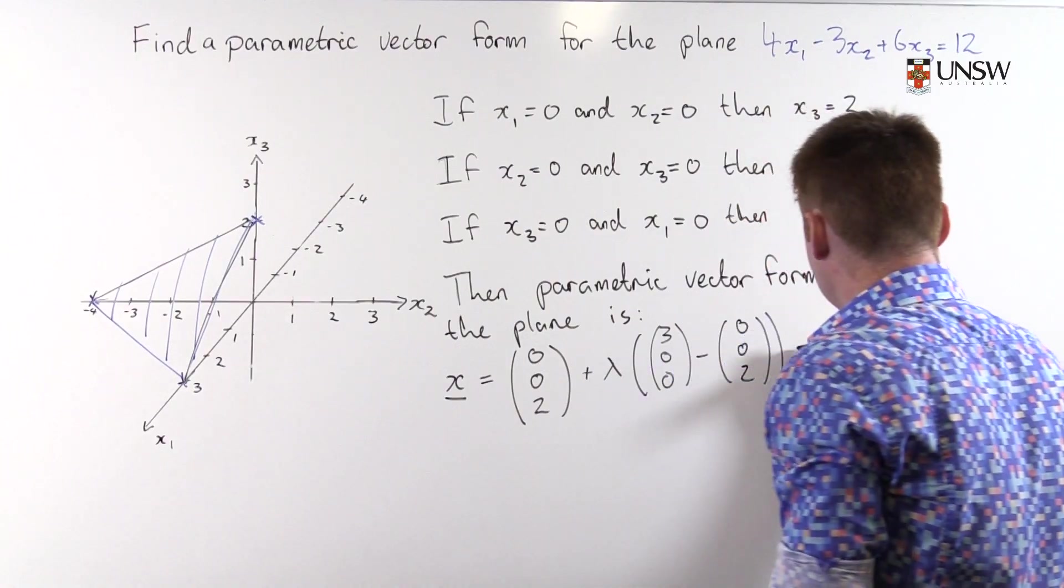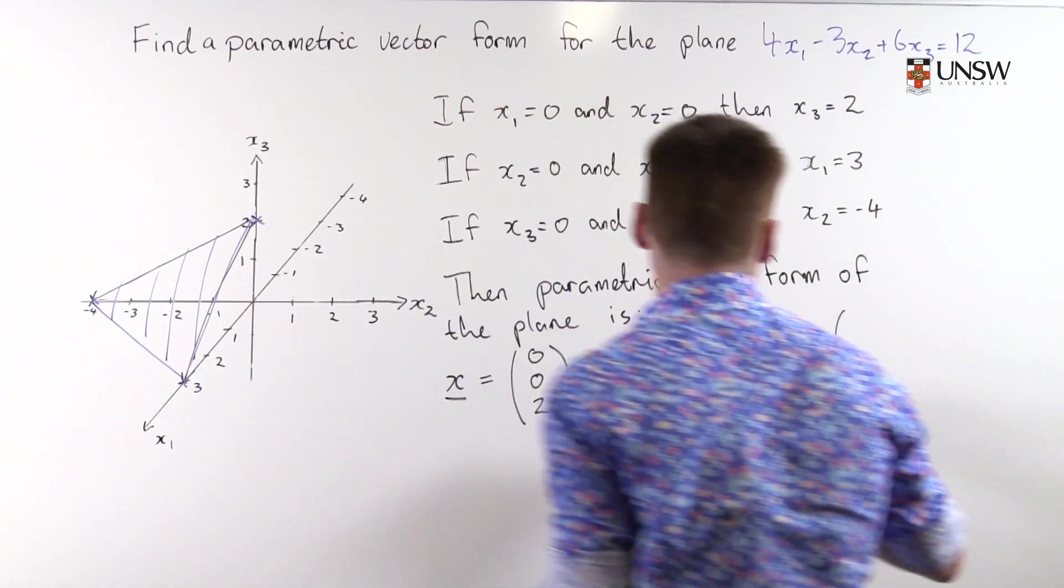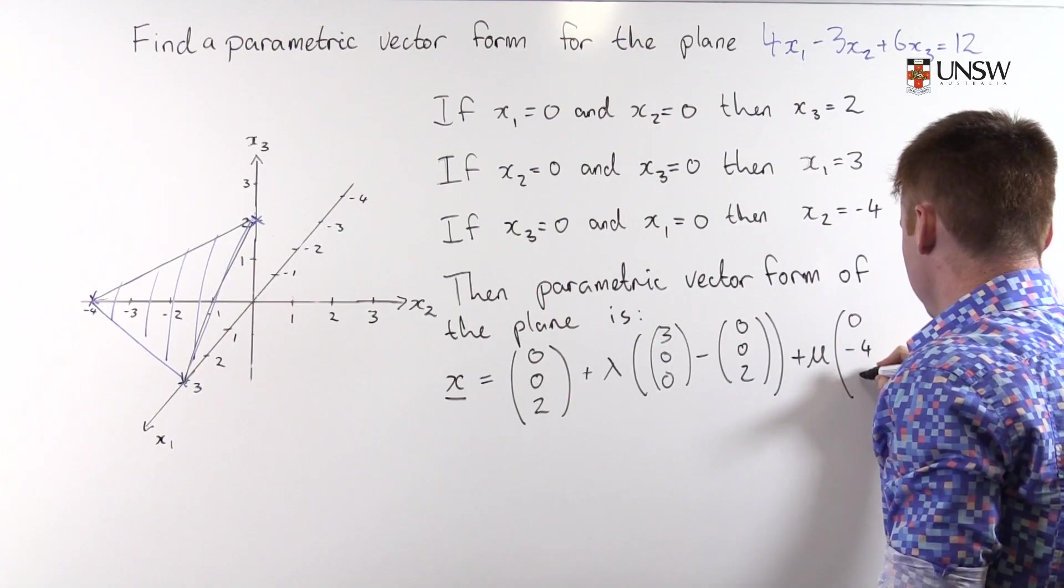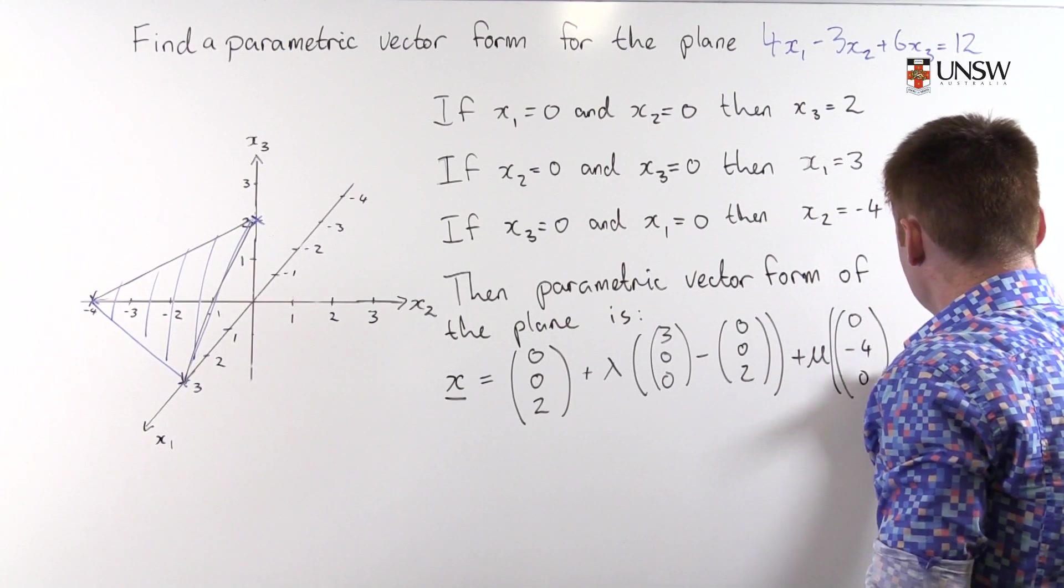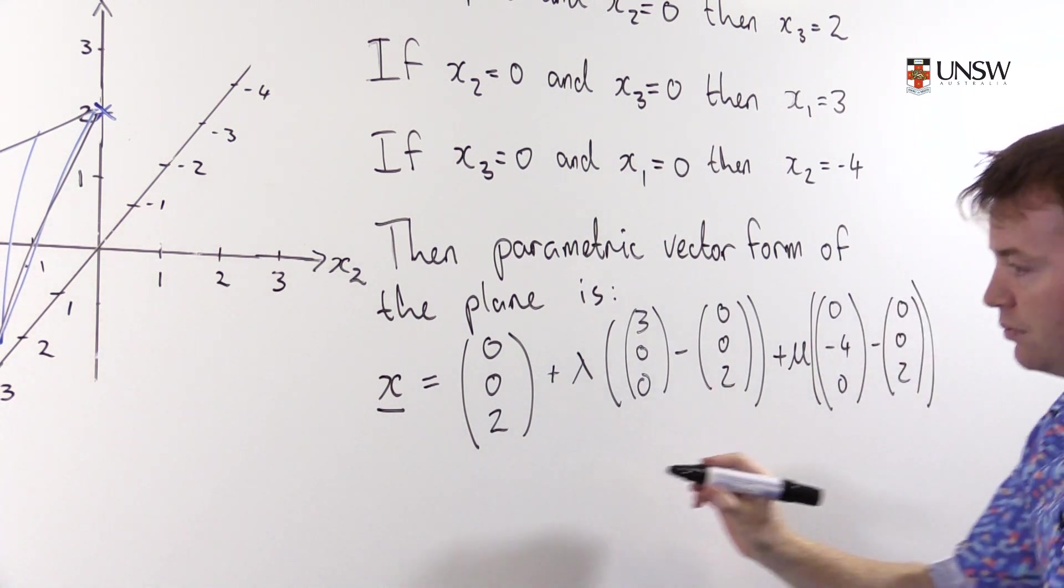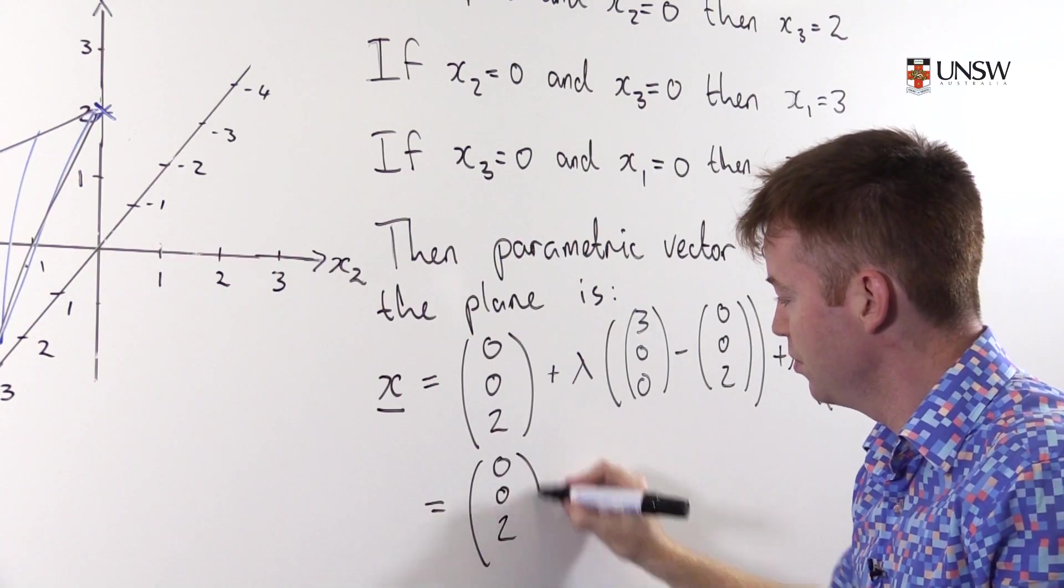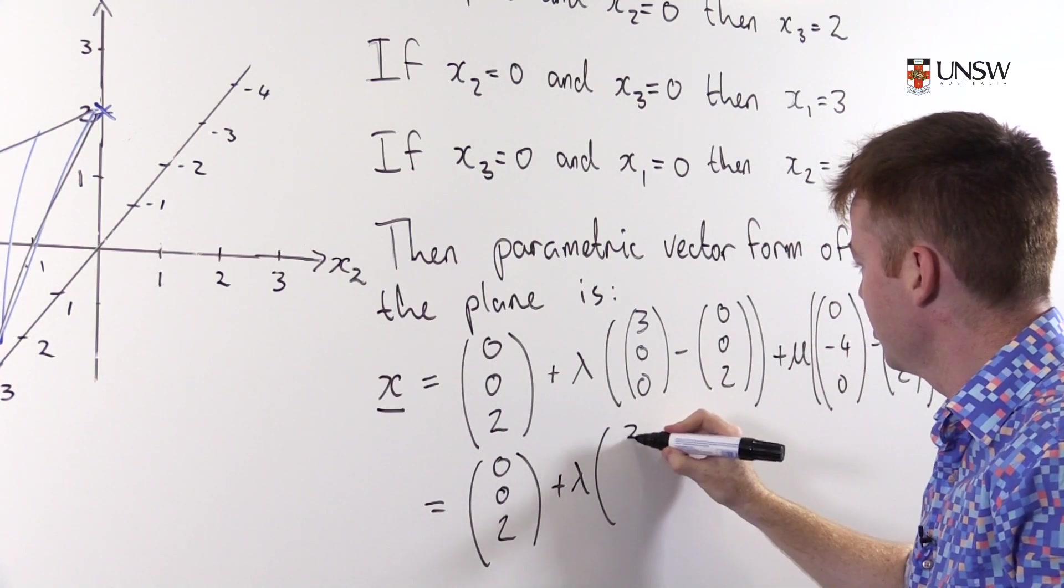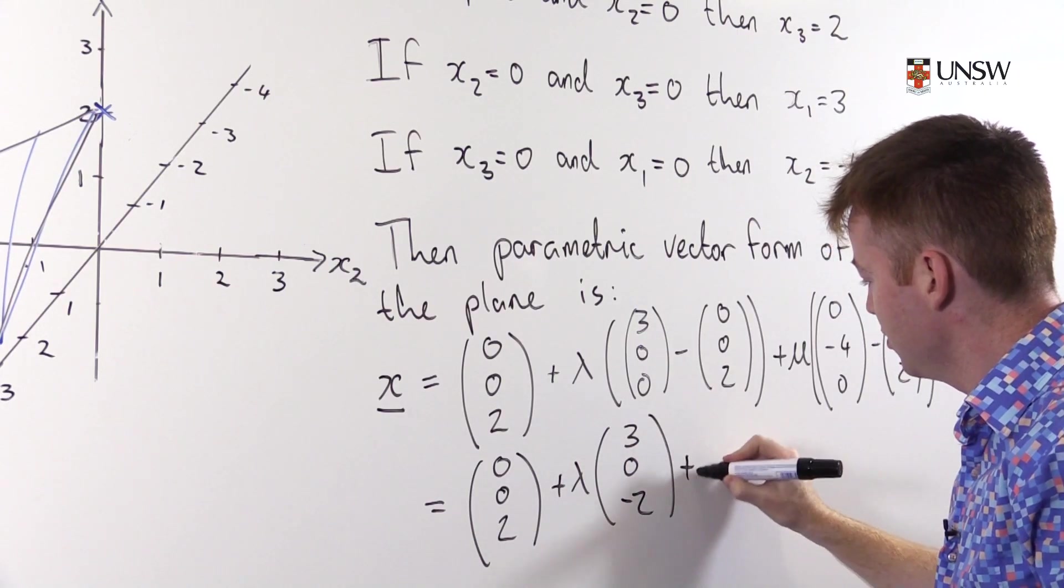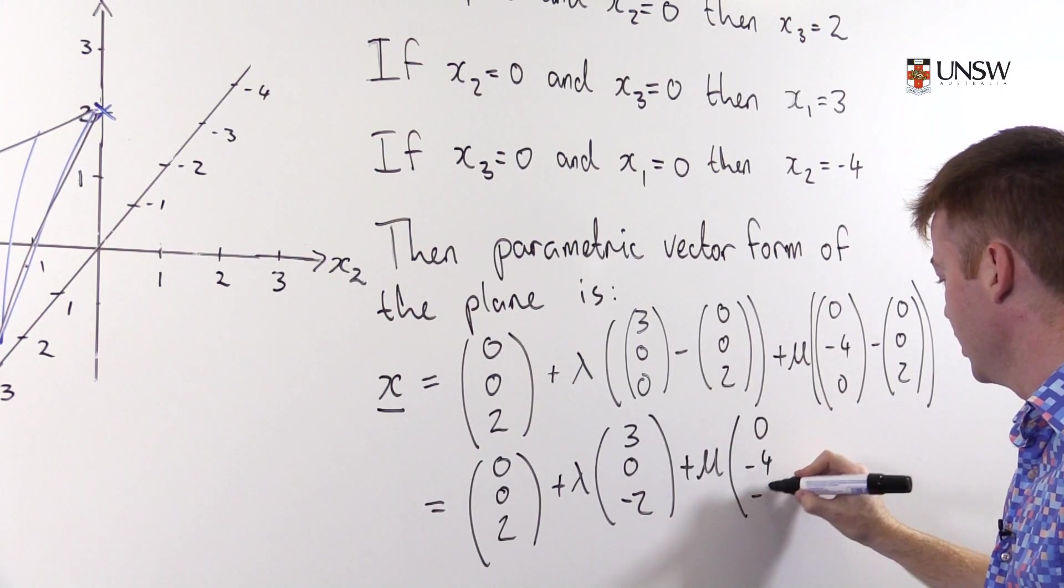Plus μ times from this vector go to this vector. That gives us (0, 0, 2) + λ(3, 0, -2) + μ(0, -4, -2).